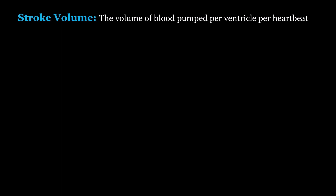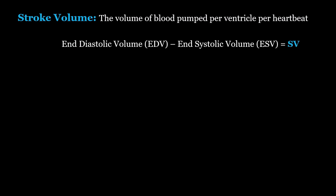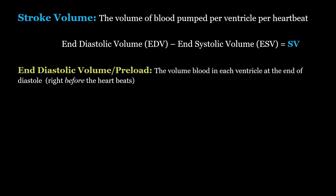Stroke volume is the difference between your end-diastolic volume and your end-systolic volume. Diastole is relaxation and systole is contraction. Your end-diastolic volume is the volume of blood in each ventricle at the end of the relaxation period, right before your heart beats. This is sometimes used interchangeably with the term preload.